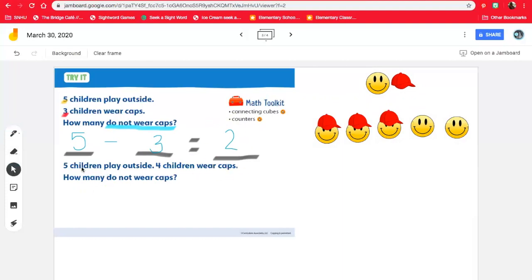Let's try it with the next problem. Five children play outside. So that's an important number to know. Five children play outside. How many wear caps? Four. Four children wear caps. The problem's asking, how many do not wear caps? So just like last time, we have our five friends playing outside. But instead of three caps this time, there's four children wearing caps. So the problem that we would write would look like this. Five take away four. And how, and then the answer for how many are not wearing caps is one. So five take away four is one.